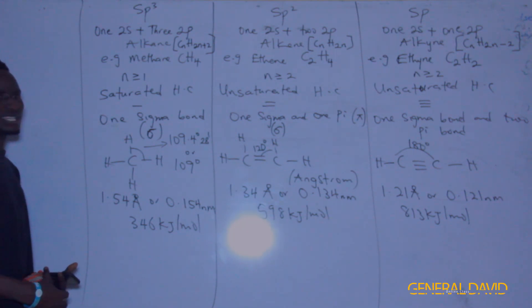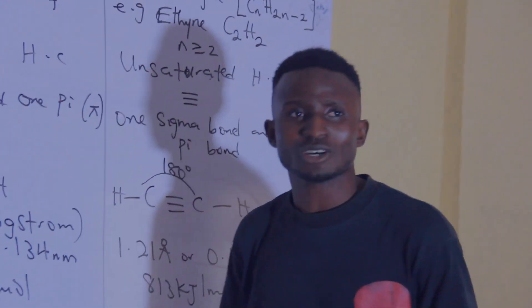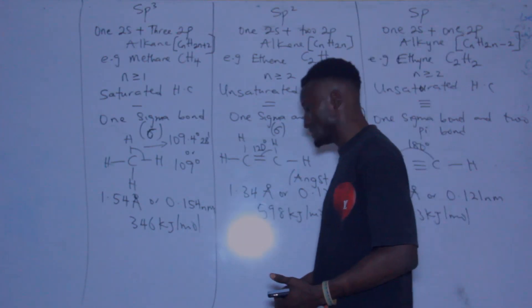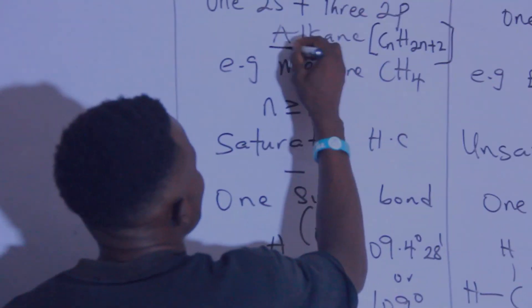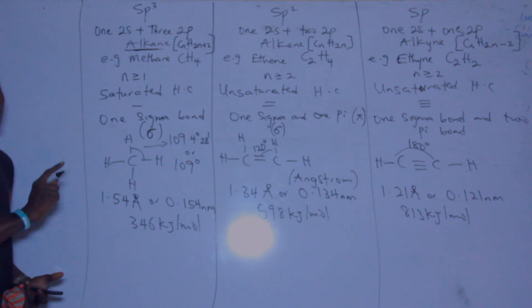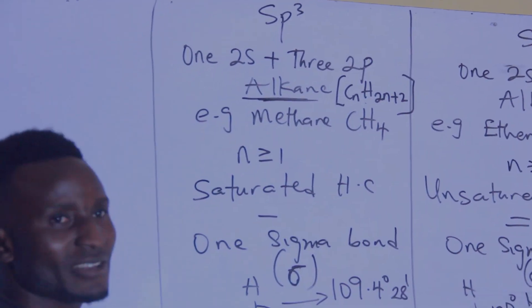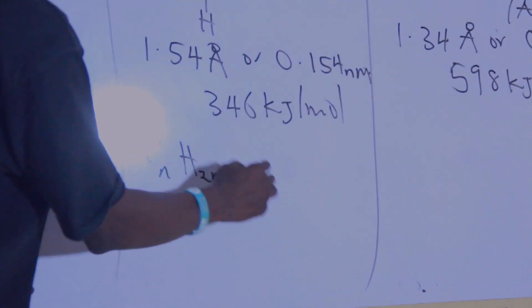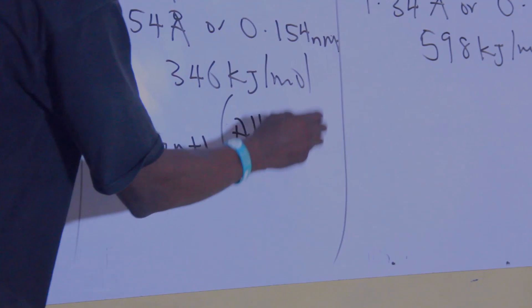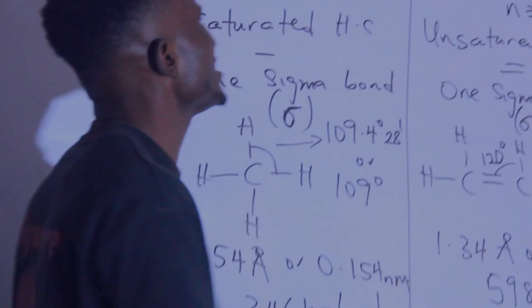When they talk about sp³ hybridization, they are talking about the alkane family. When they talk about sp², they mean the alkene family. When they talk about sp, they mean the alkyne family. Since alkane has the general formula CₙH₂ₙ₊₂, if you remove one hydrogen atom from this formula, it becomes CₙH₂ₙ₊₁, and this is the general formula for the alkyl group.